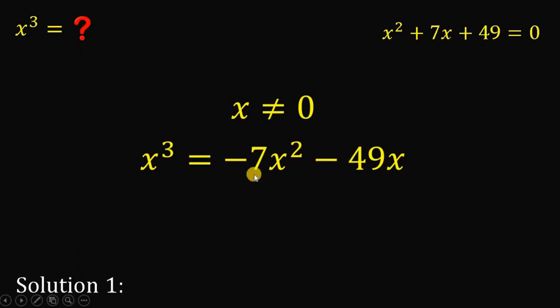Now, let's factor out negative 7 because we know 49 is just 7 times 7. So, let's factor out negative 7. This will give us negative 7 multiplied by x squared plus 7x.